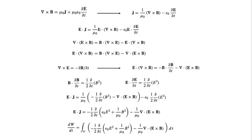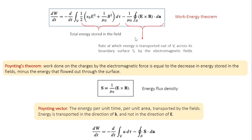The rate of work done is the volume integral of E dot J, so dW by dt equals the volume integral of E dot J. Now there are two volume integral terms. The second term is a divergence, and by invoking Gauss's theorem, the volume integral of a divergence can be converted into a surface integral. So the rate of work done becomes minus d by dt times the volume integral of (one half epsilon naught E squared plus 1 over mu naught B squared) d tau, minus 1 over mu naught times the closed surface integral of E cross B dot dA.